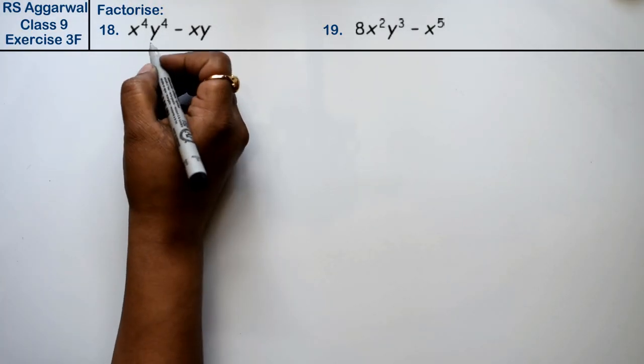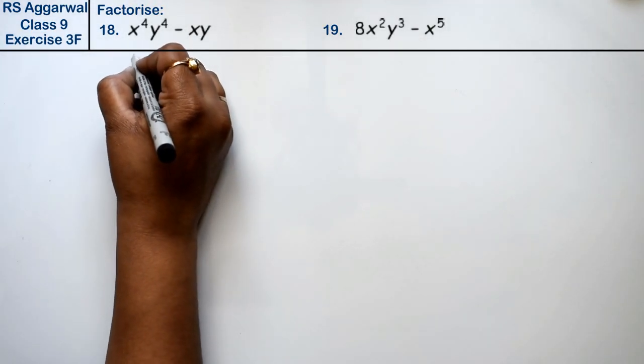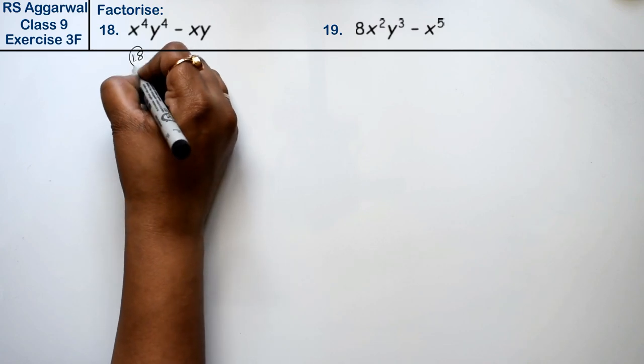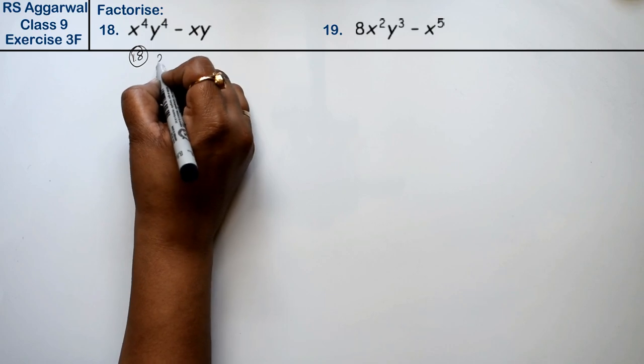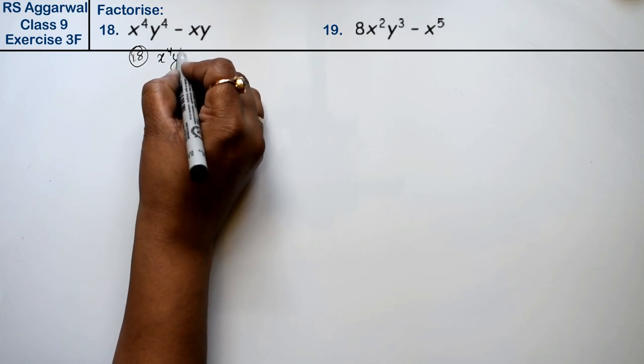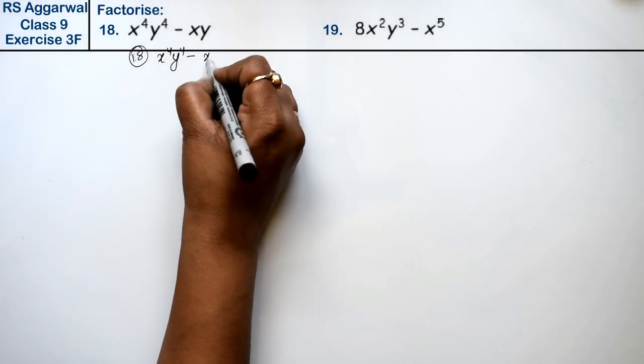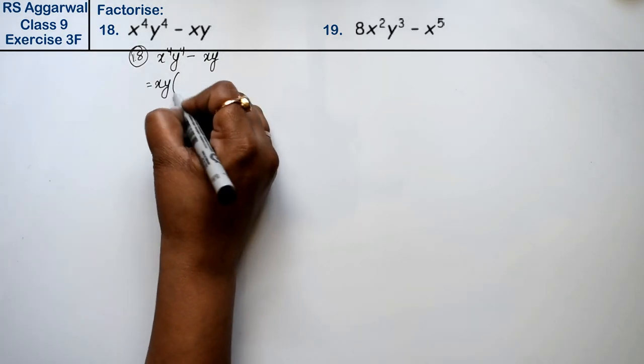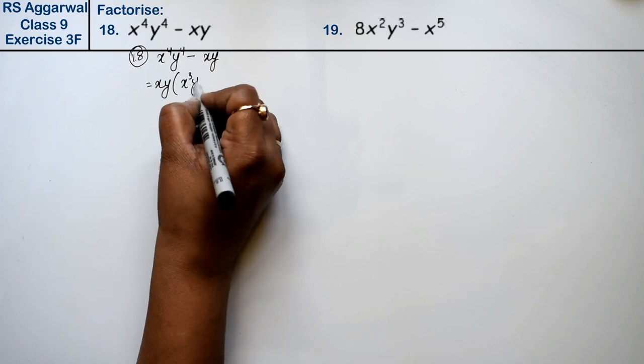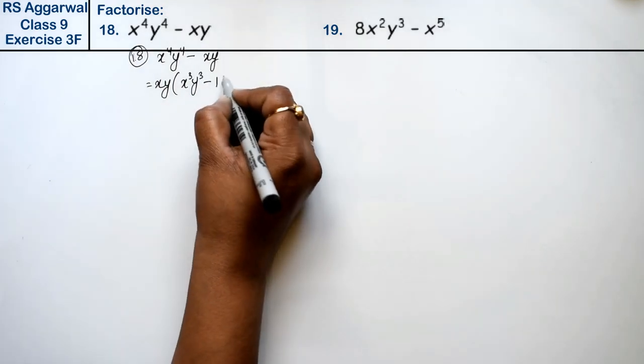Let's do question number 18 of exercise 3F, that is factorization of polynomial. Question number 18 is x to the power 4, y to the power 4 minus xy. See friends, xy is common in both terms.